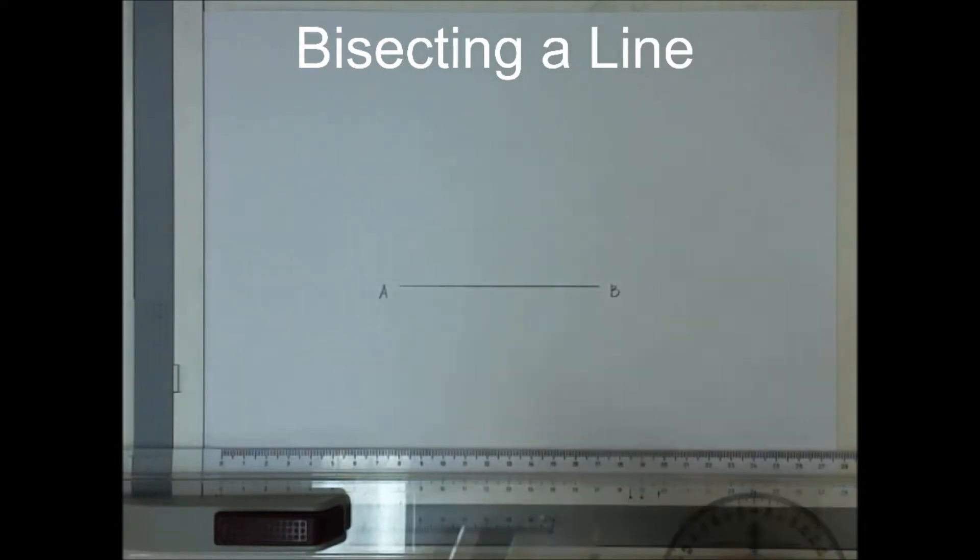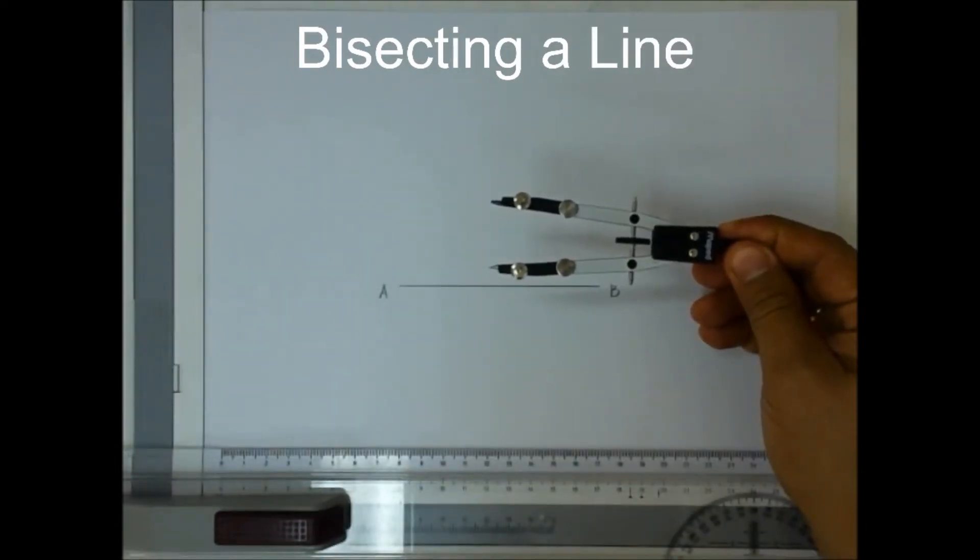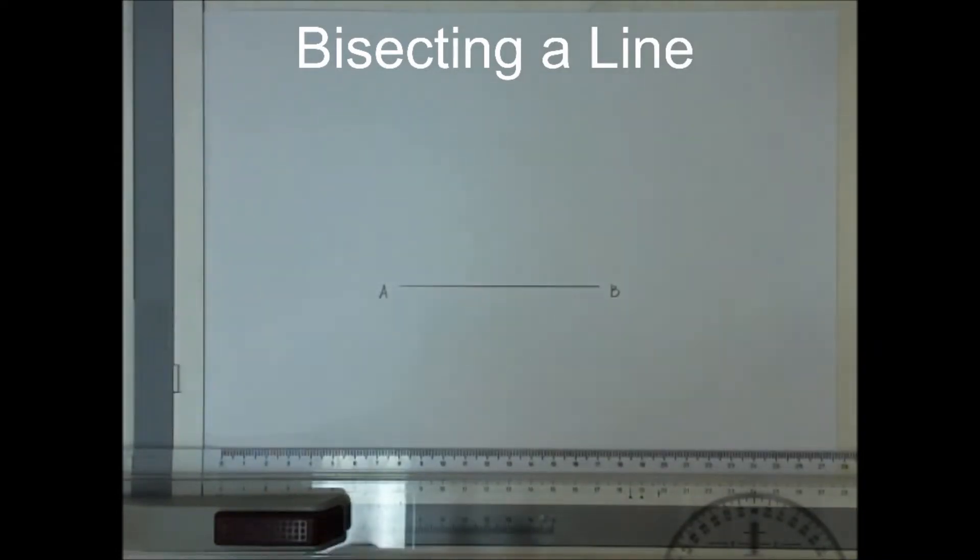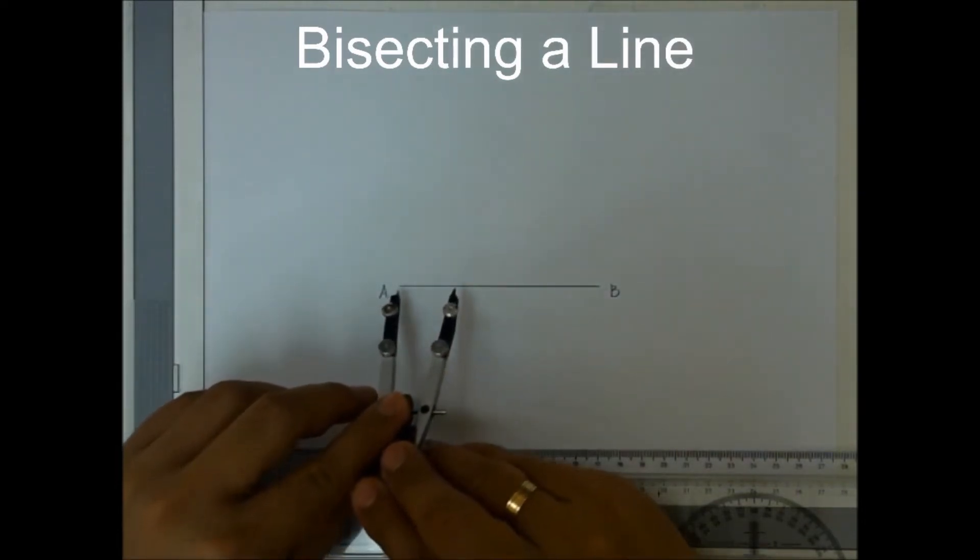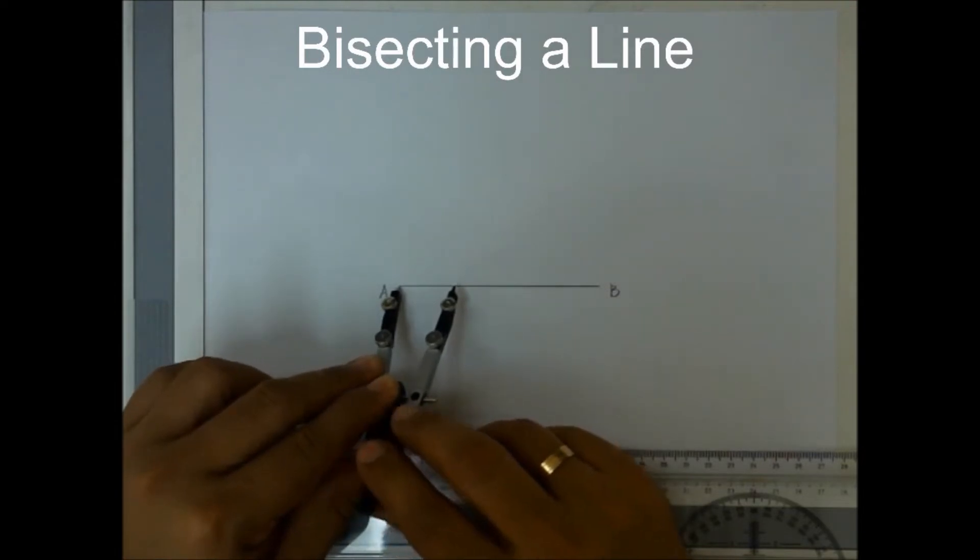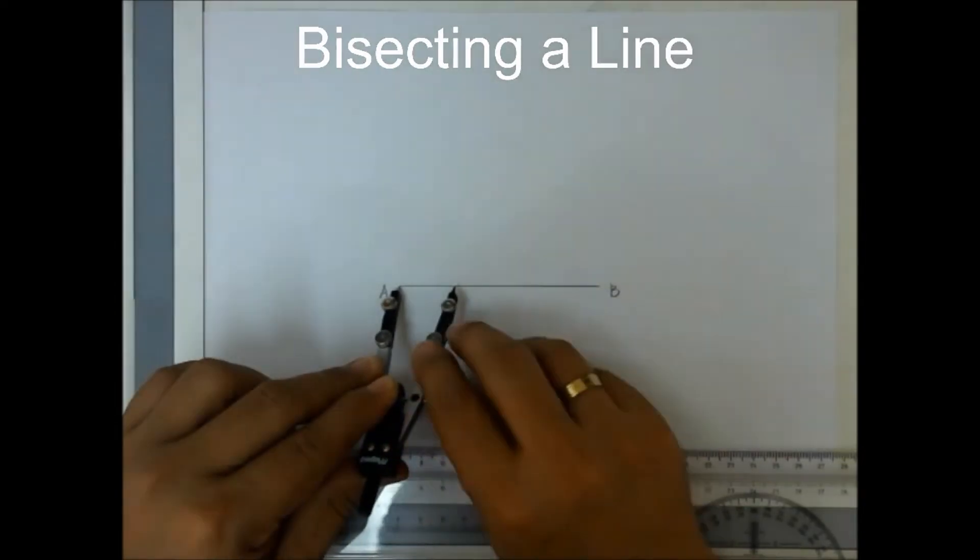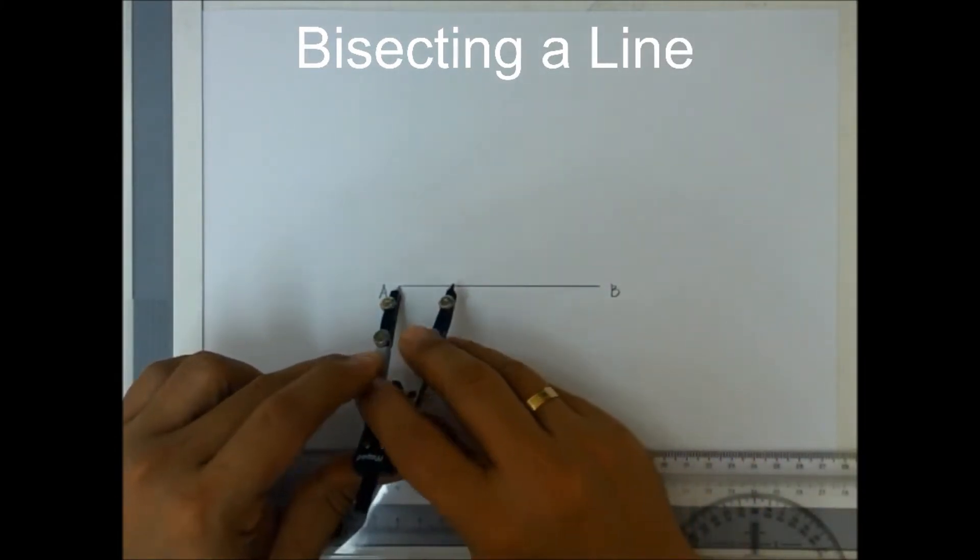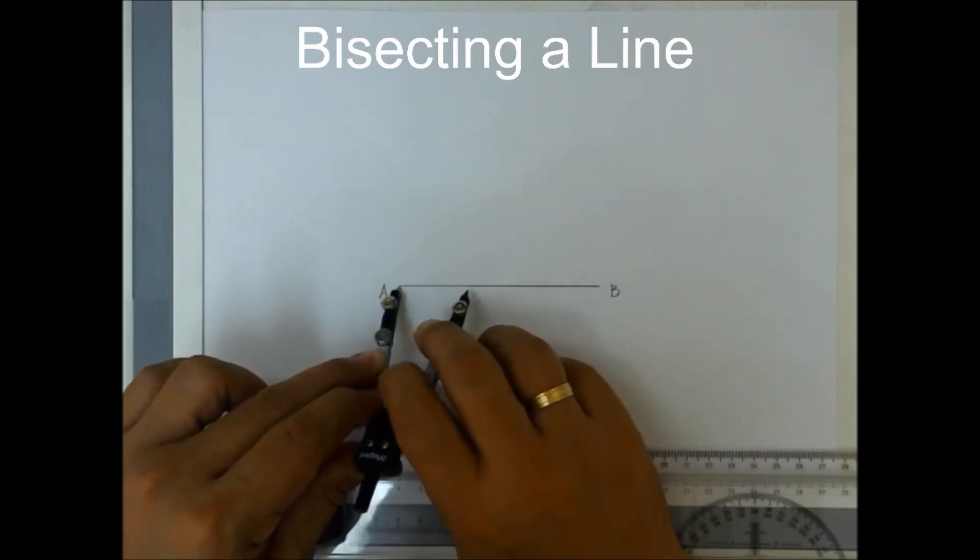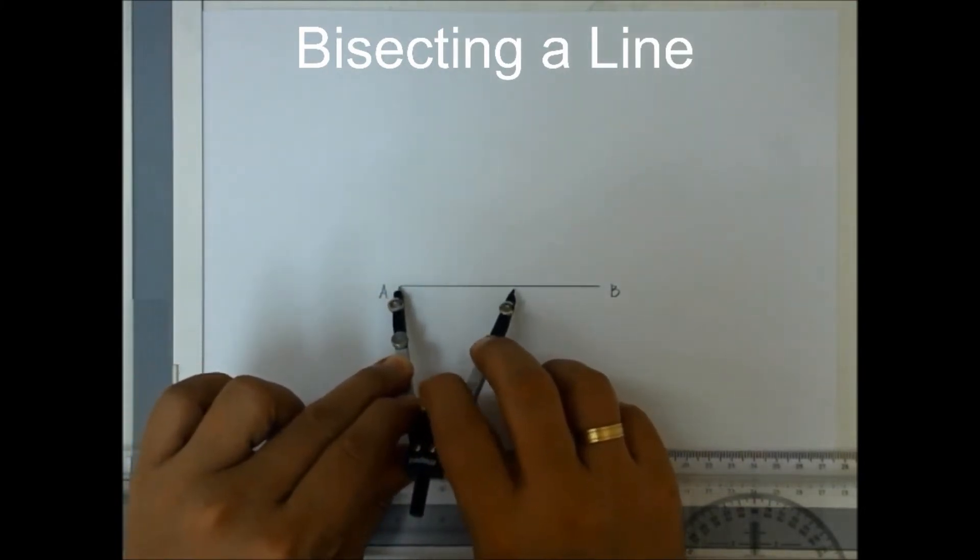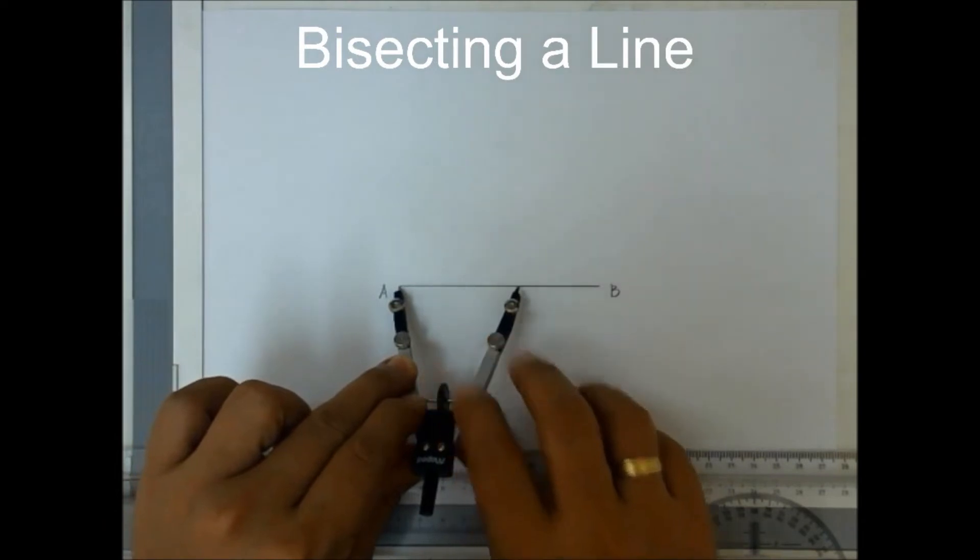We will use our compass to bisect this line AB. The first step is to point your needle pointer of your compass at point A. And then open your compass roughly after the midpoint of line AB. Say for example, here.